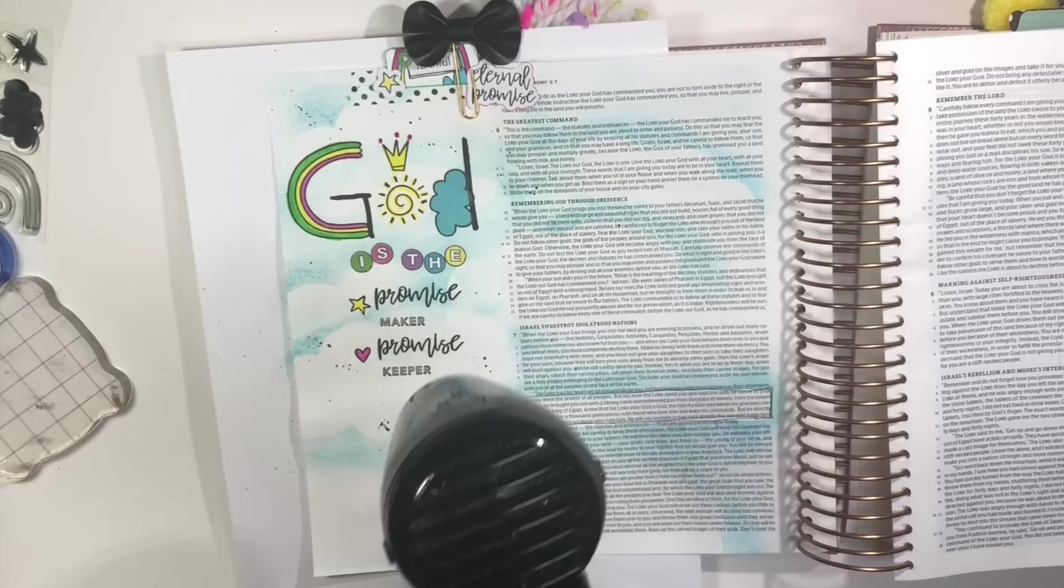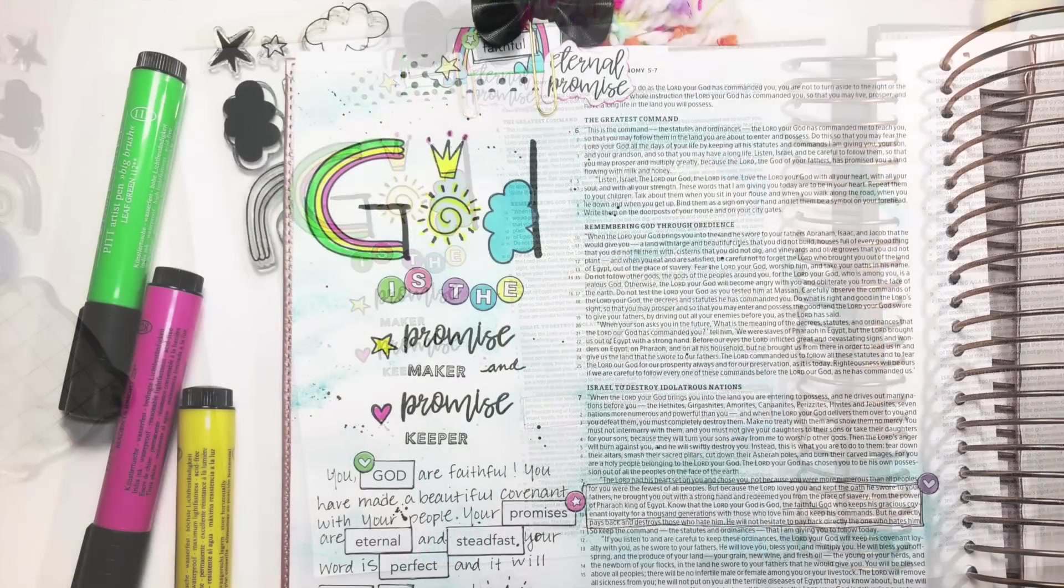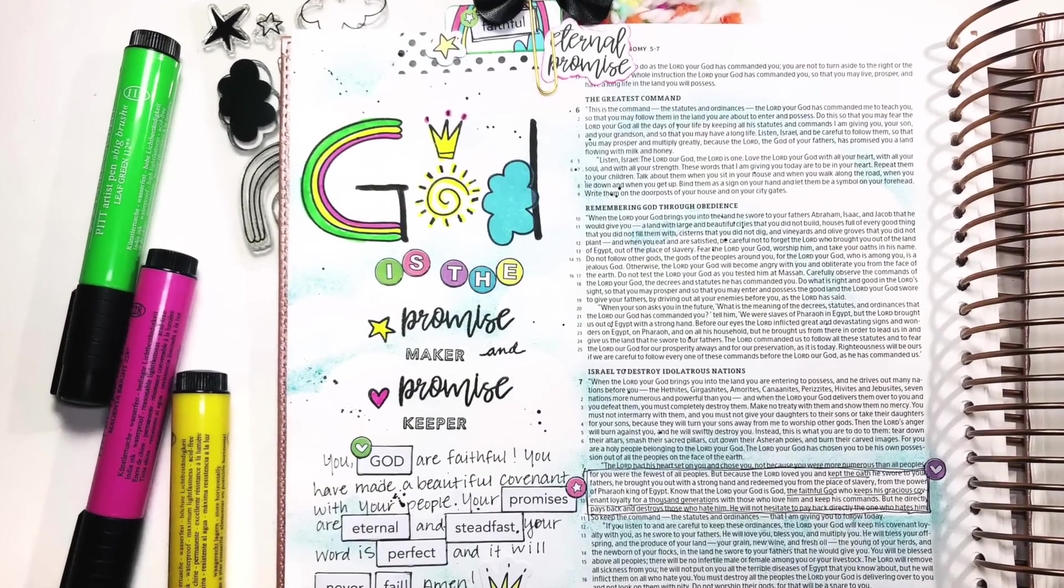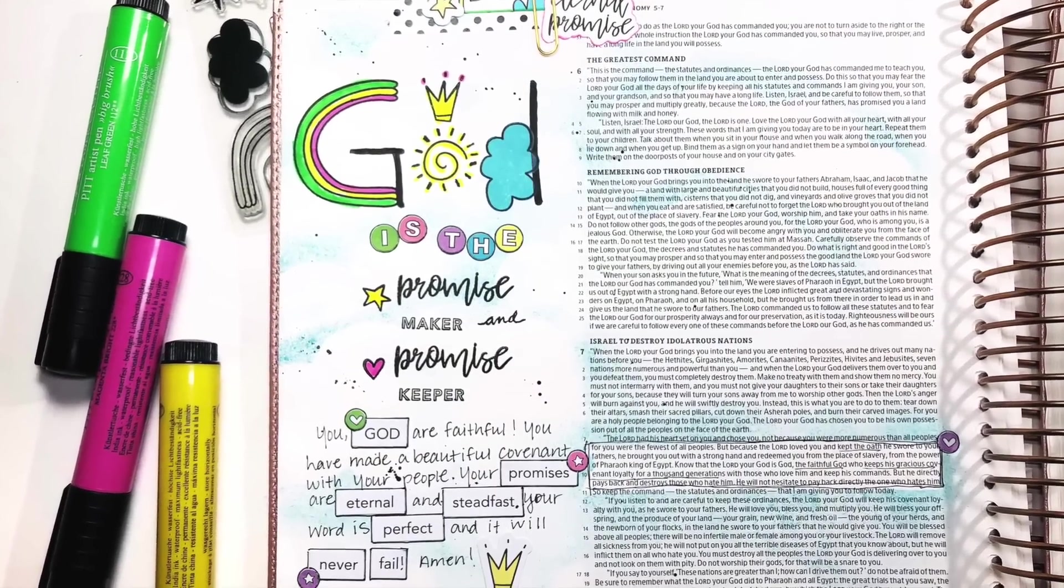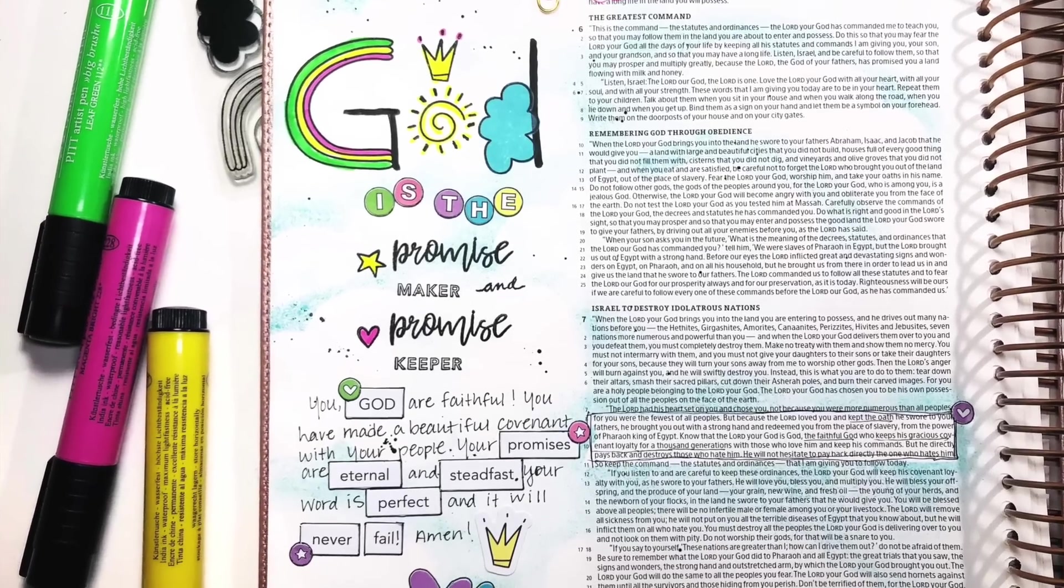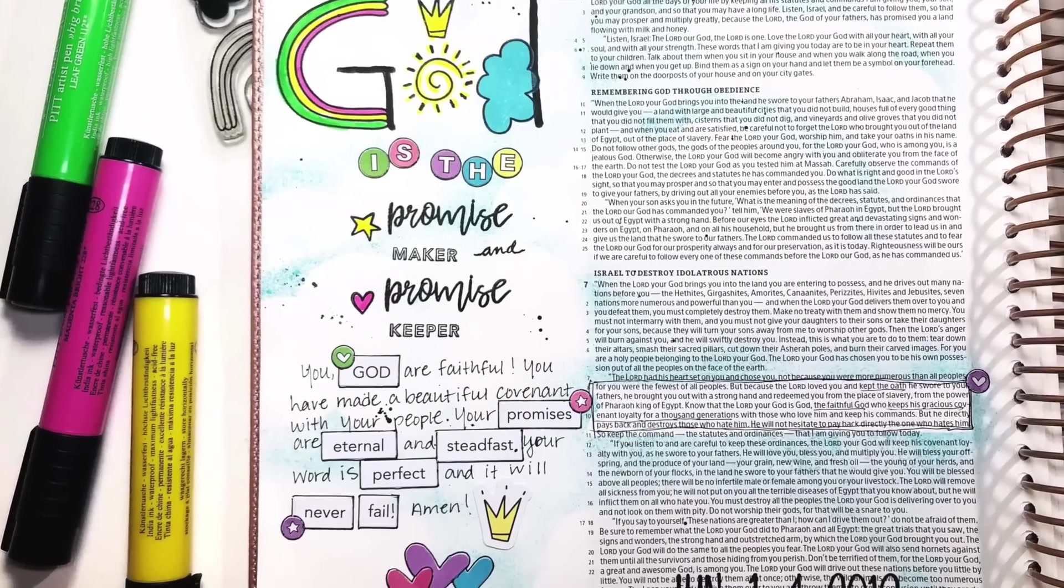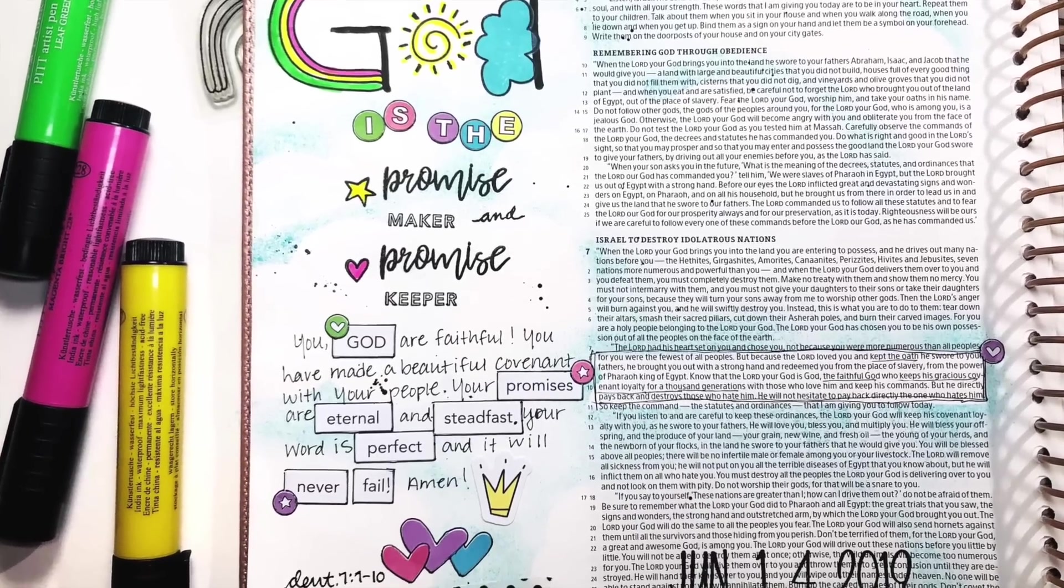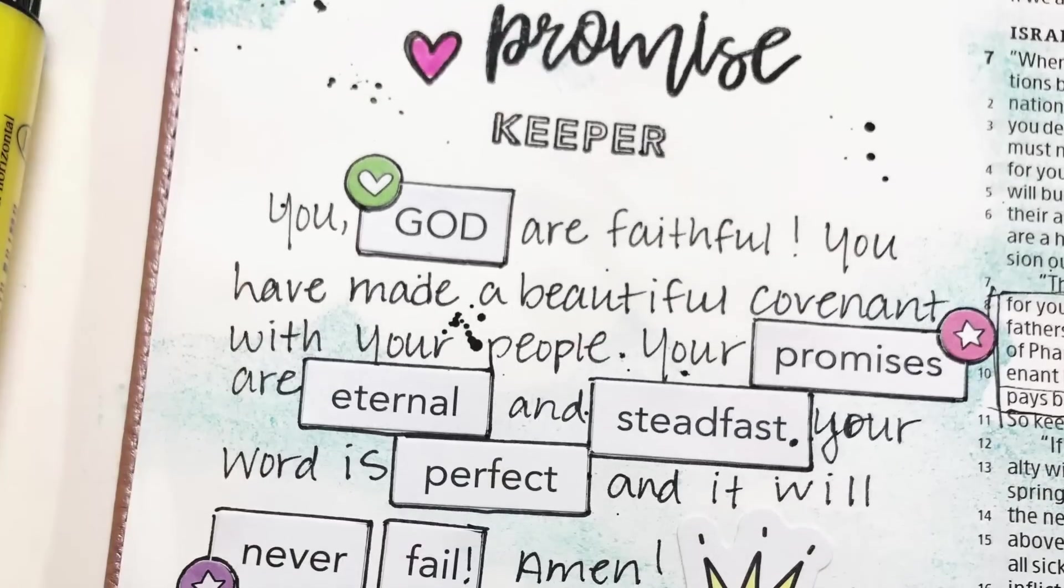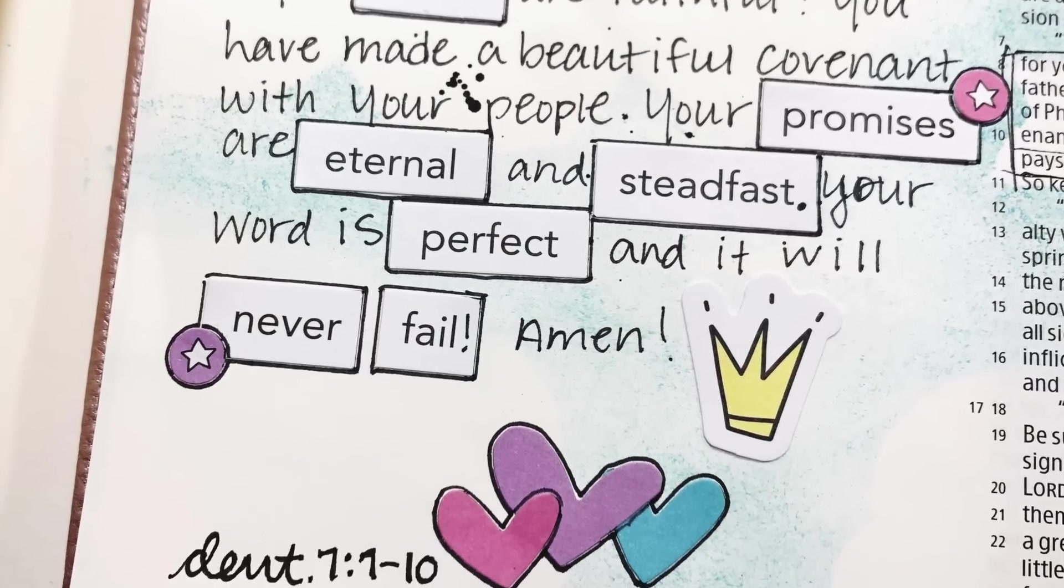And I add some decor stickers and some of the word Fetty stickers to complete my journaling. And what it says is, you, God, are faithful. You have made a beautiful covenant with your people. Your promises are eternal and steadfast. Your word is perfect, and it will never fail. Amen.